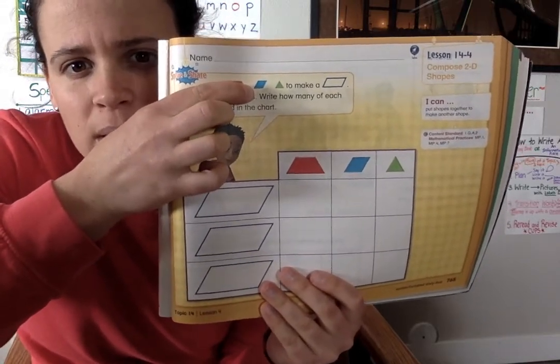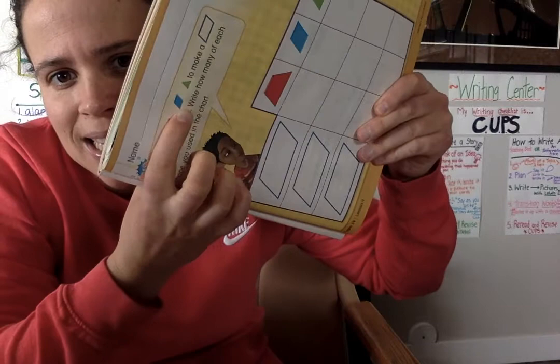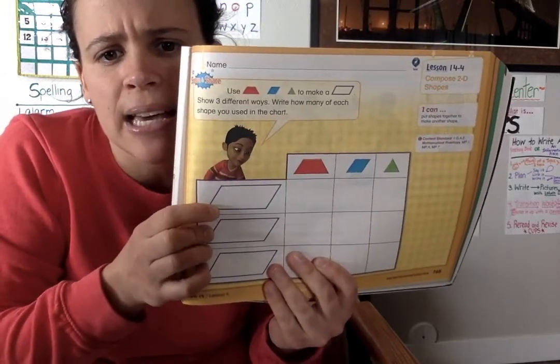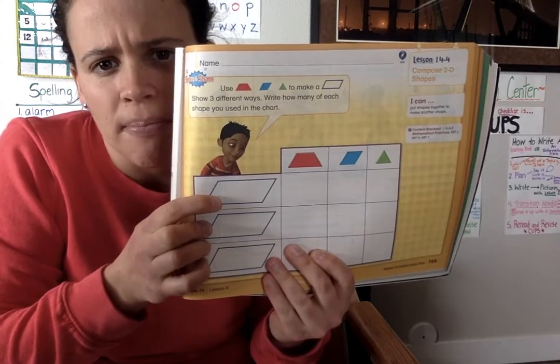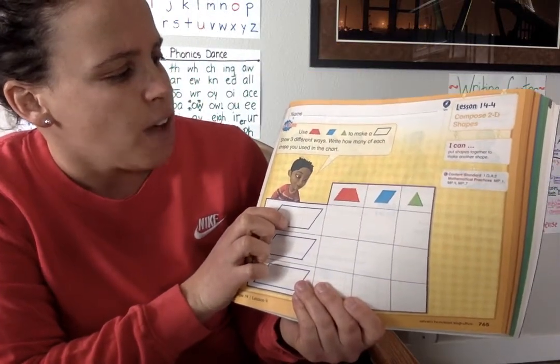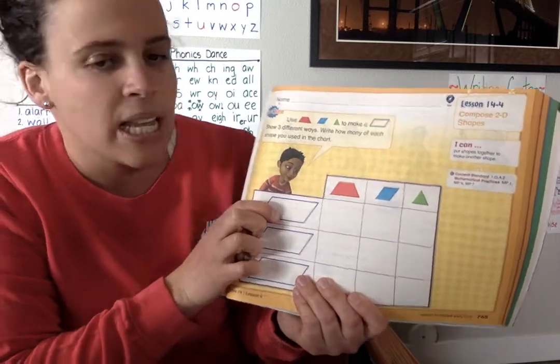This shape, you turn it this way, it's like a diamond, and a triangle to make a parallelogram. Show three different ways, right, how many of each shape you use in the chart.